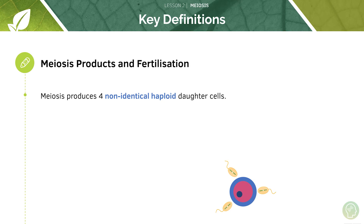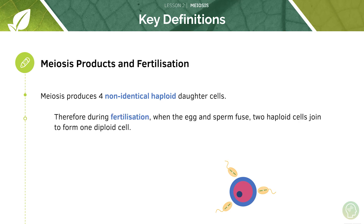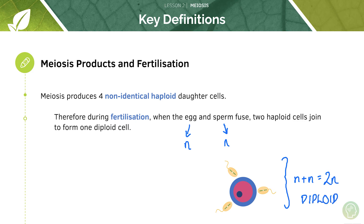Meiosis produces four non-identical haploid daughter cells. It's really important to remember that meiosis produces non-identical daughter cells, whereas mitosis produces identical daughter cells. During fertilisation, when we make a new person, the gametes are haploid but fusing two haploid cells creates a diploid cell. The egg has N chromosomes and the sperm also has N chromosomes, so when the egg and sperm fuse we get N plus N, which is 2N — a diploid cell. Fertilisation is when two haploid cells join to form one diploid cell.